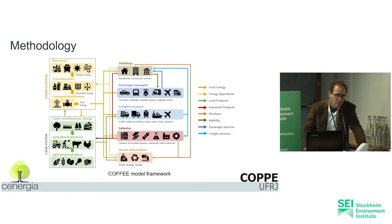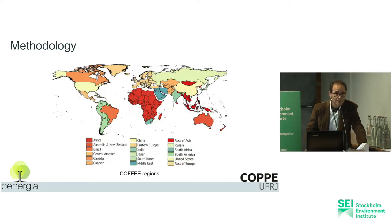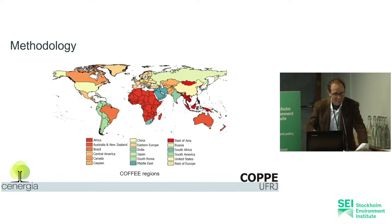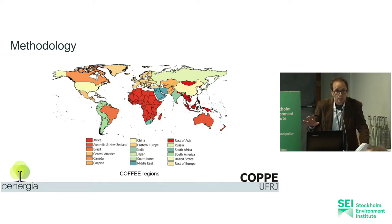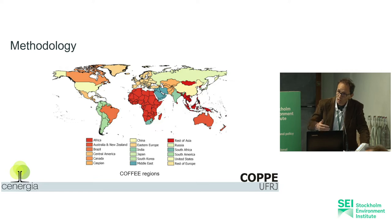The objective function is to minimize the cost for supplying energy services and food demand for 18 regions in the world. To do that, we have the land use system representation and the energy system representation for these regions. It is important to say that we have to run the land use system together to have the representation for GHG emissions — not only CO2, but also emissions from deforestation and from agriculture and pasture activities.